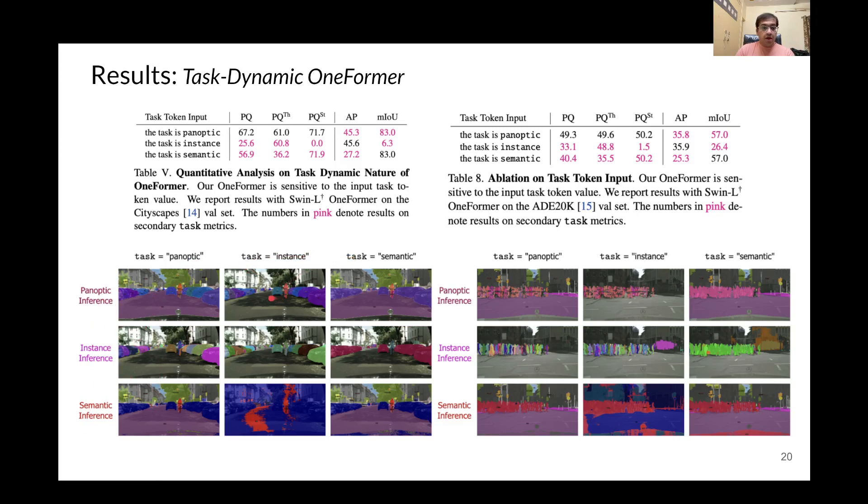But if we set the value of task as instance, then if we do panoptic post-processing, our result only includes the foreground objects. Similarly, if we set task as semantic and do panoptic post-processing, then for all the foreground objects, only one binary mask is output, showing that our model is able to learn the distinction between each task very well.